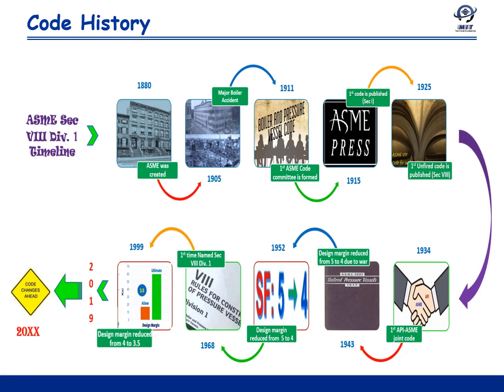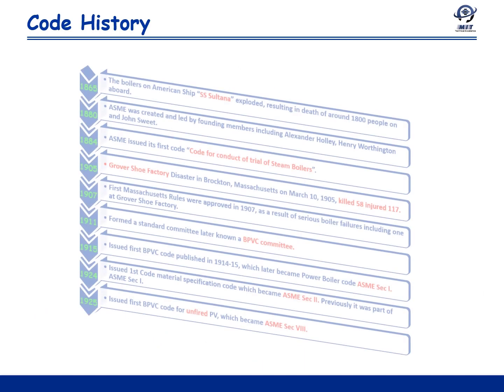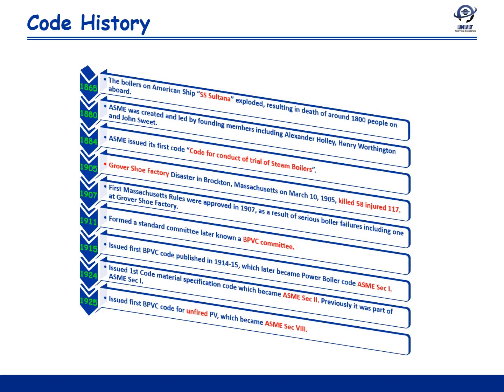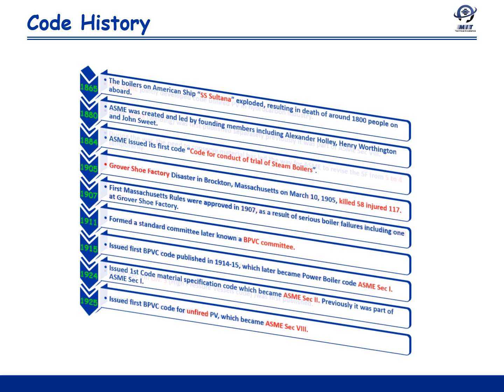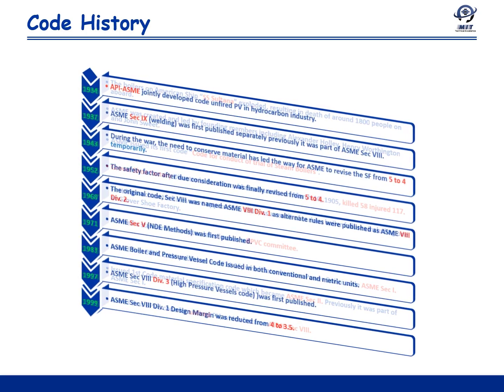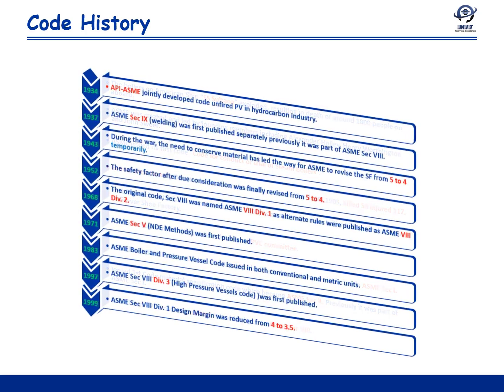Finally, ASME Section 8 Division 1 design margin was reduced from 4 to 3.5 in the year 1999 — the last time the safety margin was reduced. Currently, due consideration is being given to reducing the safety factor even lower, from 3.5 down to 3.